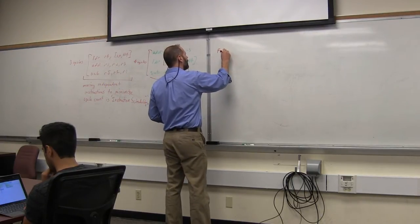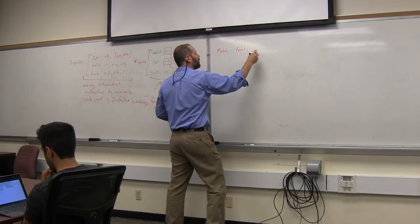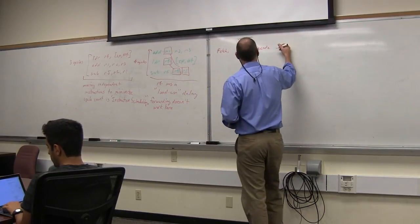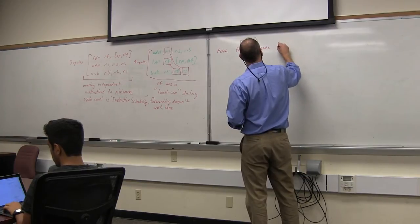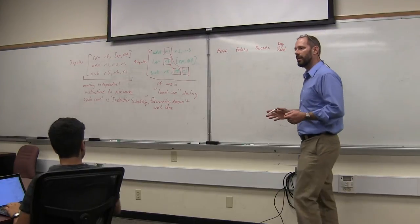So, let's recap what those eight stages are. We have fetch one. The Raspberry Pi, fetch two, decode, register read. These are the common four stages for all instruction types.